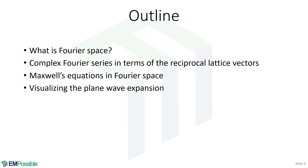Maxwell's equations in Fourier space. This can be a confusing topic if you're new to it, so I want to start off by talking about what Fourier space is and trying to visualize that for you. We'll then move on to the complex Fourier series, modifying it to do expansions that incorporate our reciprocal lattice vectors, because we want to do our expansions in the direction of those reciprocal lattice vectors. We'll then write Maxwell's equations in Fourier space — stepping from real space to Fourier space — and visualize the plane wave expansion that we end with.